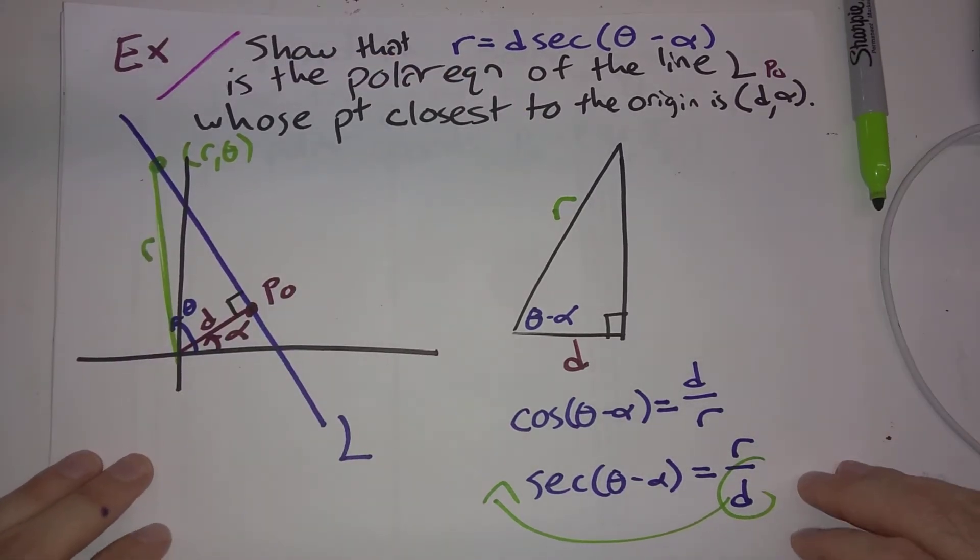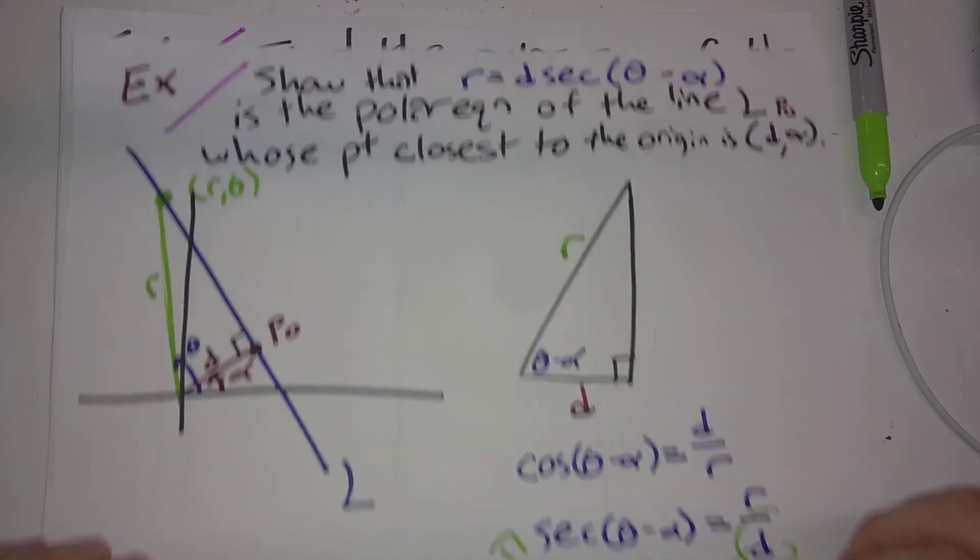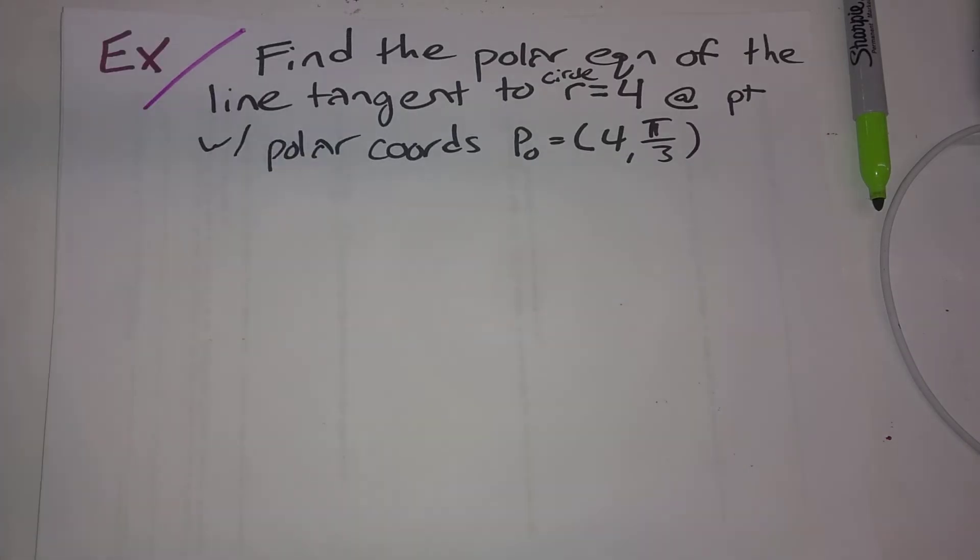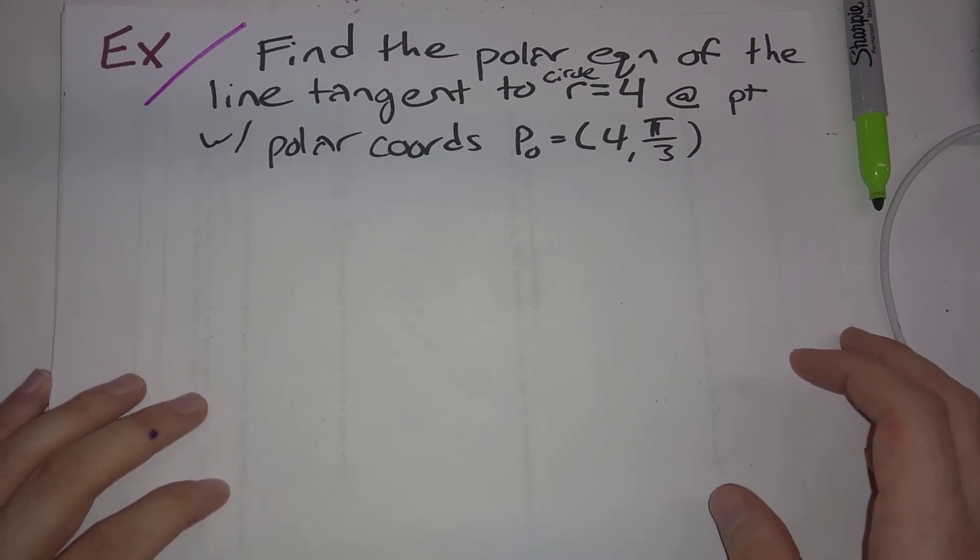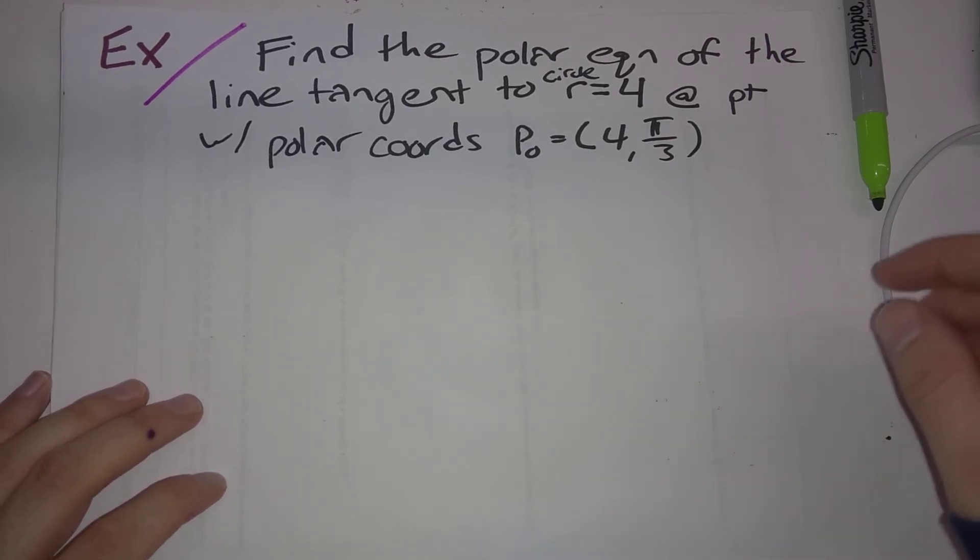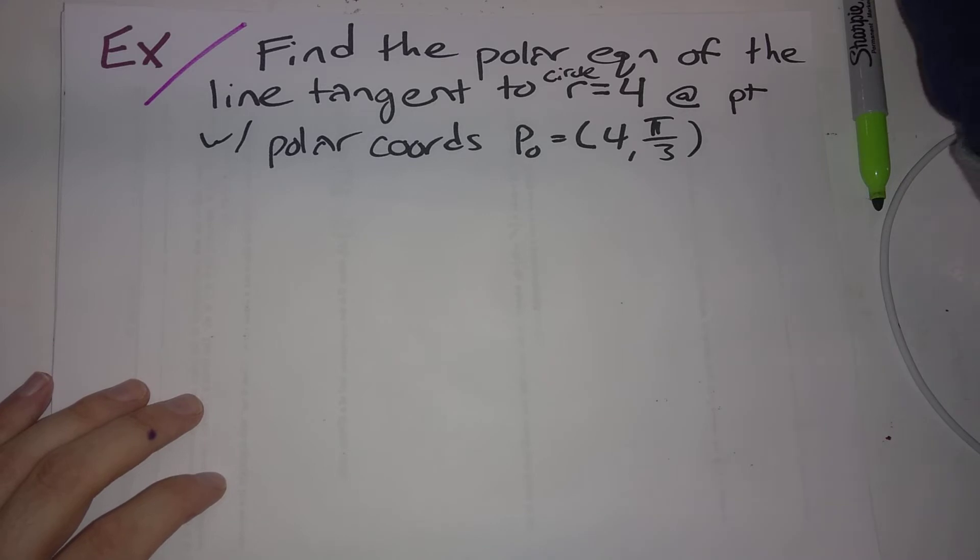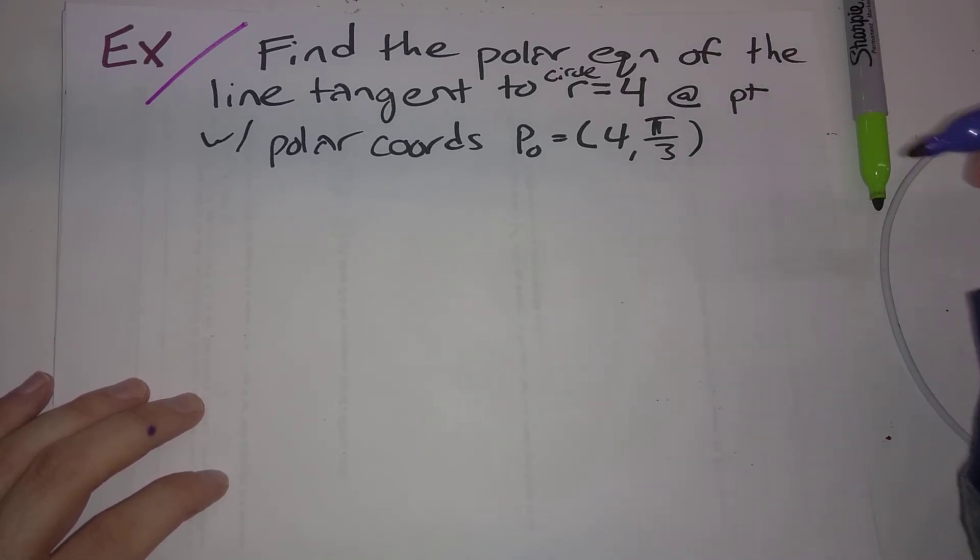So we are done with this problem. And now we're just going to use it right here. Find a polar equation of a line L, tangent to the circle, R is equal to 4. At the point with polar coordinates, P naught is 4 and pi over 3.